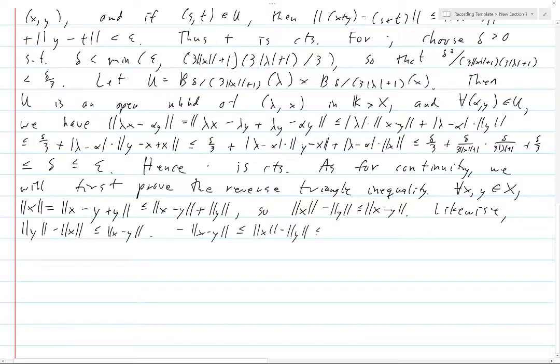And then here, this is less than or equal to ||x - y||. But what does this mean by definition? This is precisely saying that |||x|| - ||y||| is less than or equal to ||x - y||.